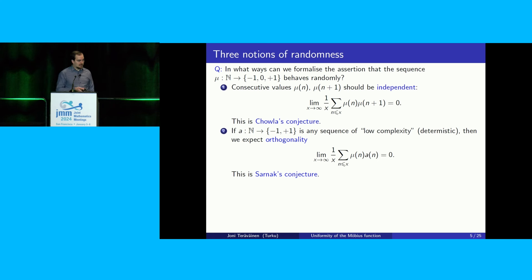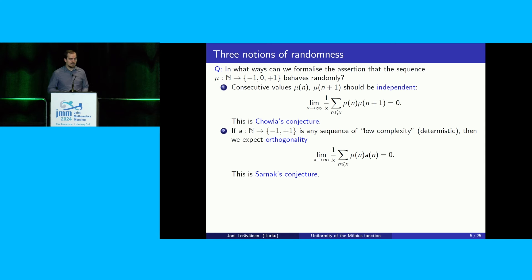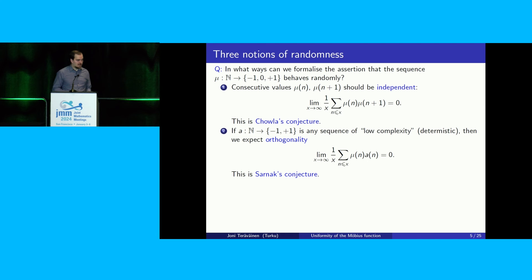Another way to say that your sequence is random would be to say that the sequence is not of low complexity in any sense, and more strongly, it should be orthogonal to anything that's of low complexity — no correlation with anything which is not very complex. In other words, the Möbius function should be orthogonal to any plus-or-minus-one sequence which is a so-called deterministic sequence. This conjecture is known as Sarnak's conjecture.